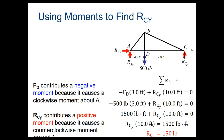Once we have the free body diagram, we need to determine the reaction forces at the bridge supports A and C before analyzing individual members. We use the equilibrium equation: the sum of moments equals zero. We're picking point A as our pivot. You could pick A or C — really any point — but you want a reasoned choice that eliminates an unknown.